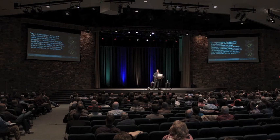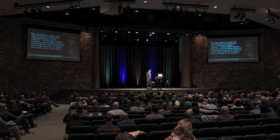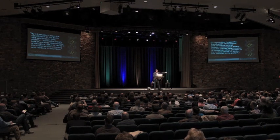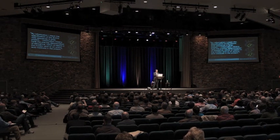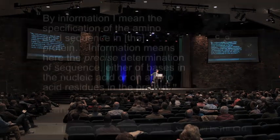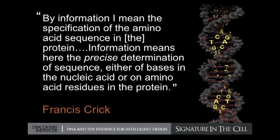When Francis Crick was clarifying the nature of the discoveries taking place in molecular biology in the late 1950s, he said when we talk about information in DNA — aware of the Shannon idea of just measurable improbability — we're not just talking about improbability. We're talking about a precise arrangement of things. By information, he says, I mean the specification of the amino acid sequence in the protein: all in the right sequence, all in the right order. Or we mean the precise determination of the sequence of bases in the DNA molecule. So we're talking about it as a functional sequence, something precisely arranged with respect to the functional requirements of an organism.